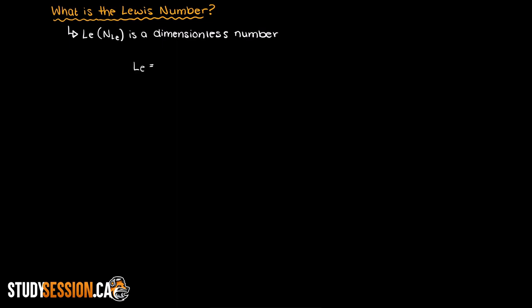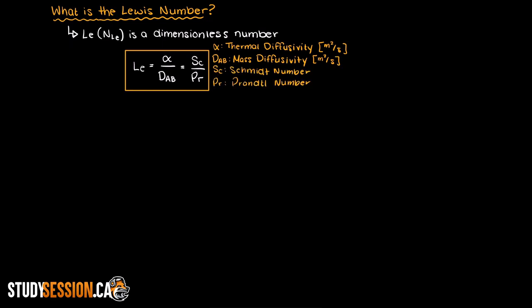The Lewis number represents the ratio of the thermal diffusivity to the mass diffusivity of a fluid. Another way to state this is that we are comparing the relative size of the thermal boundary layer in the concentration boundary layer.